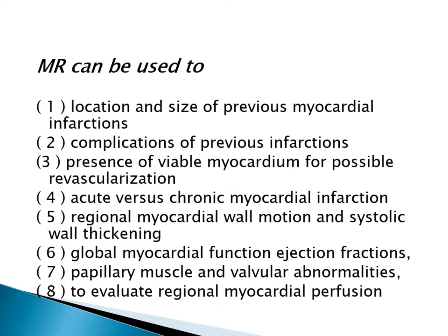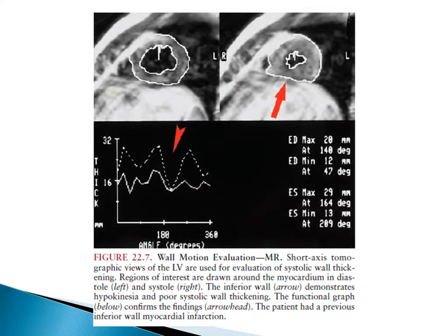MRI can be used to detect the location and size of previous myocardial infarction, differentiate and demonstrate complications of previous infarction, assess myocardium for possible revascularization, detect acute versus chronic myocardial infarction, regional myocardial wall motion, systolic wall thickening, myocardial function, ejection fraction, papillary muscle and valvular abnormalities, and evaluate regional myocardial perfusion. This MRI shows normally contracting wall during diastole and systole, but inferiorly there is reduced contractility and thickening, indicating previous myocardial infarction.